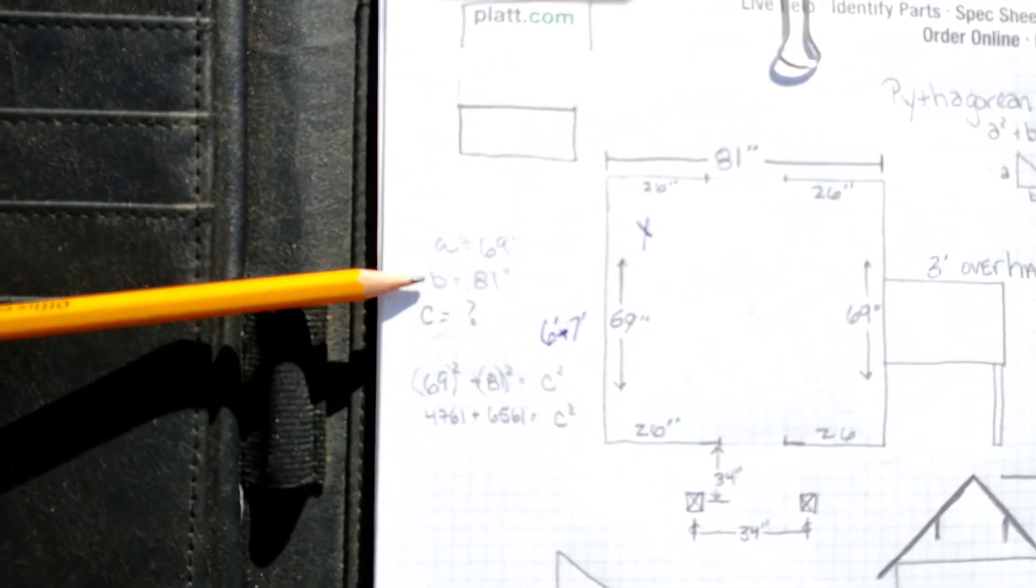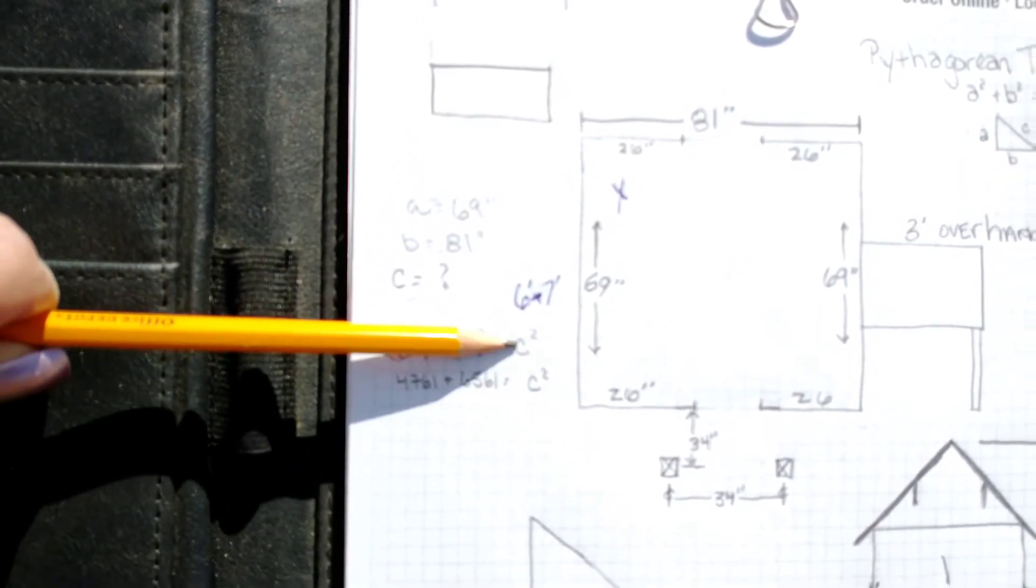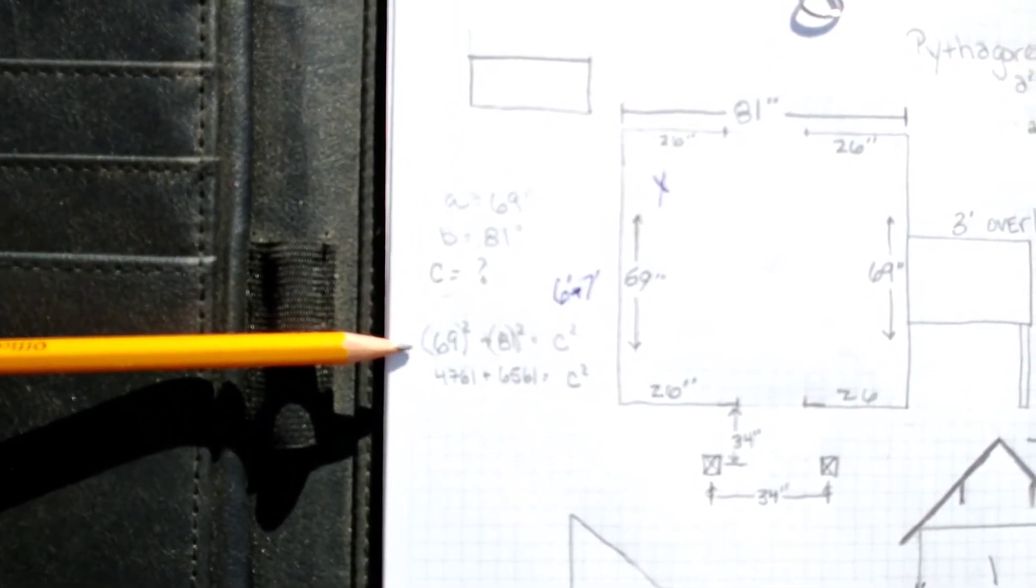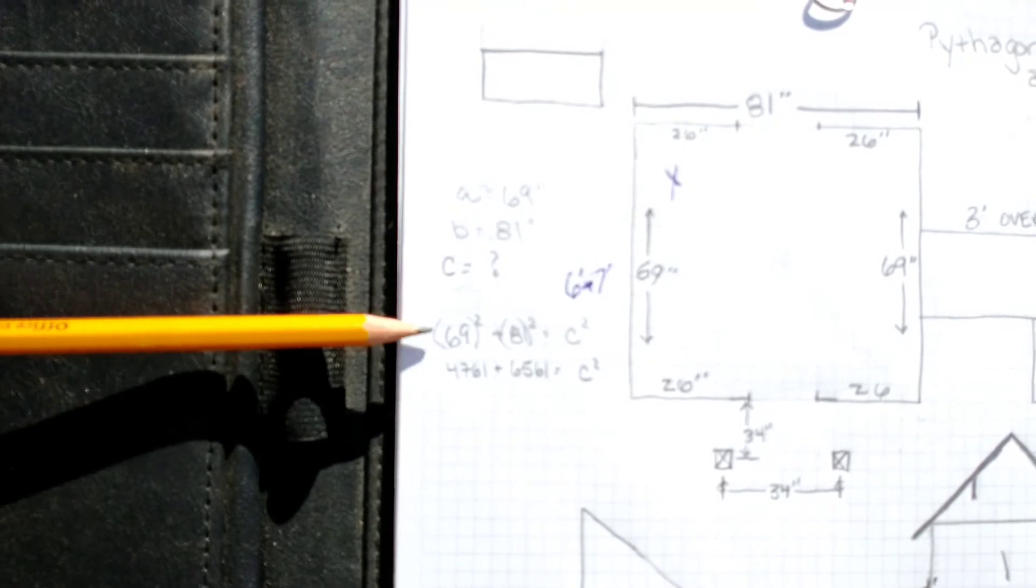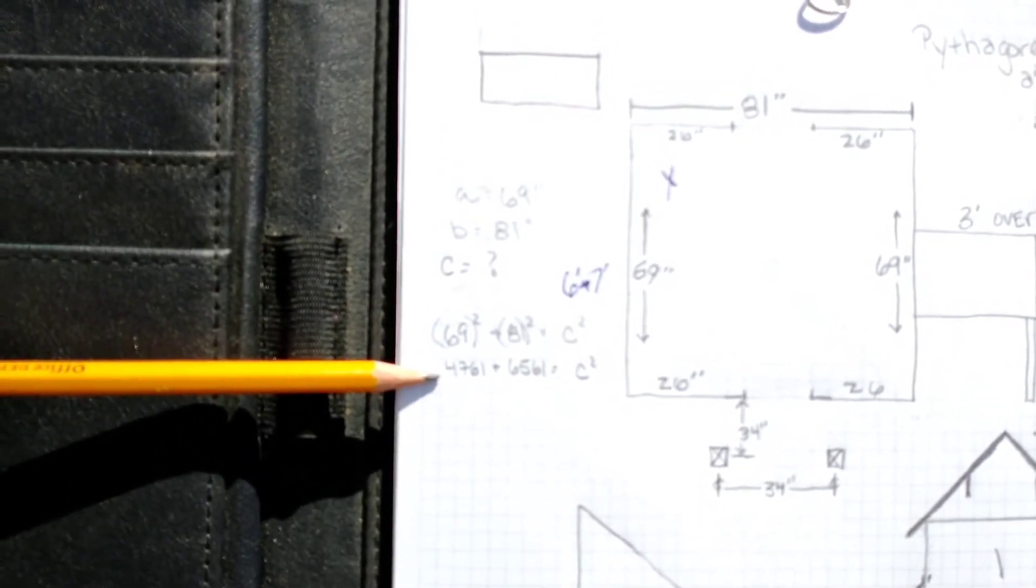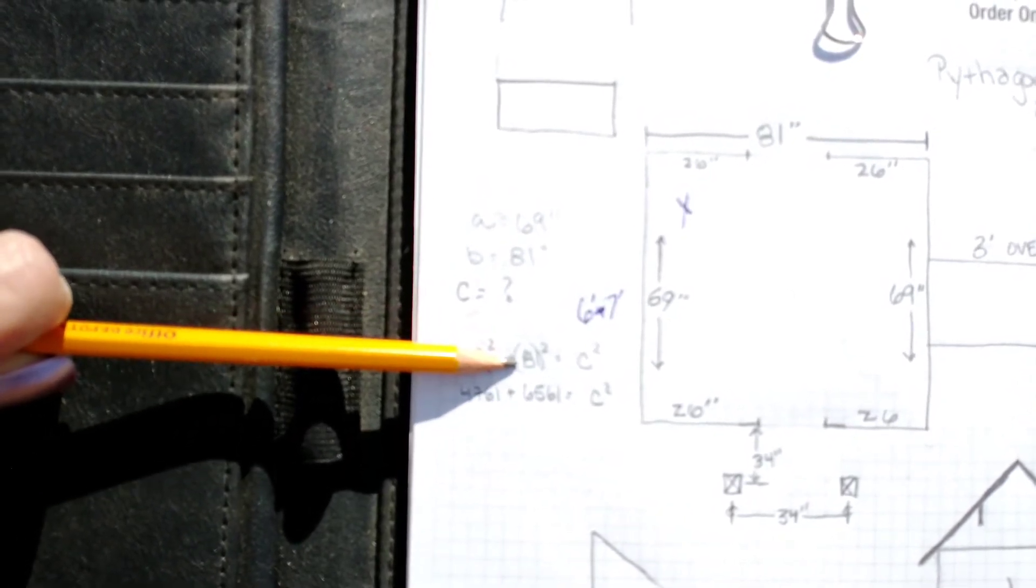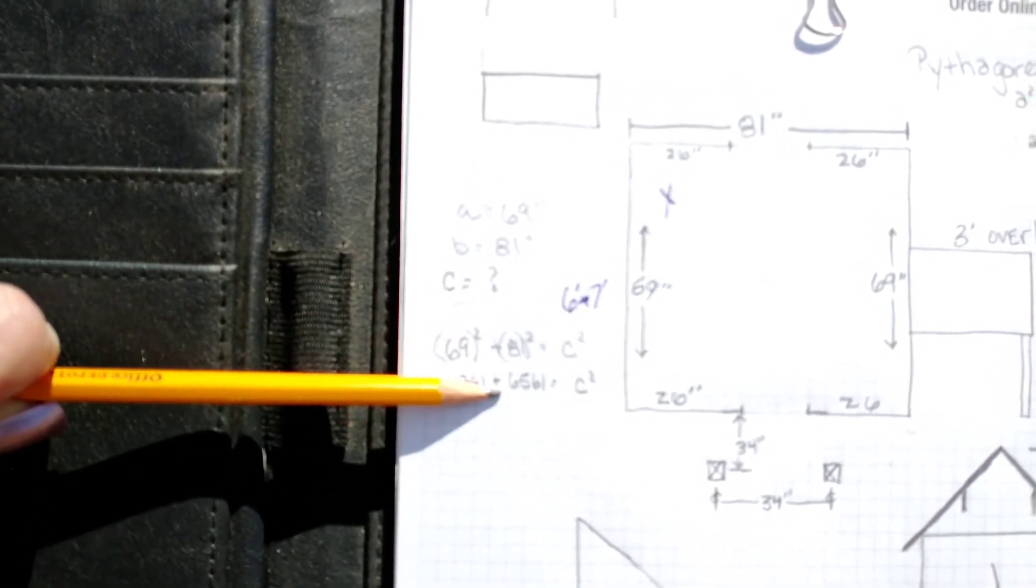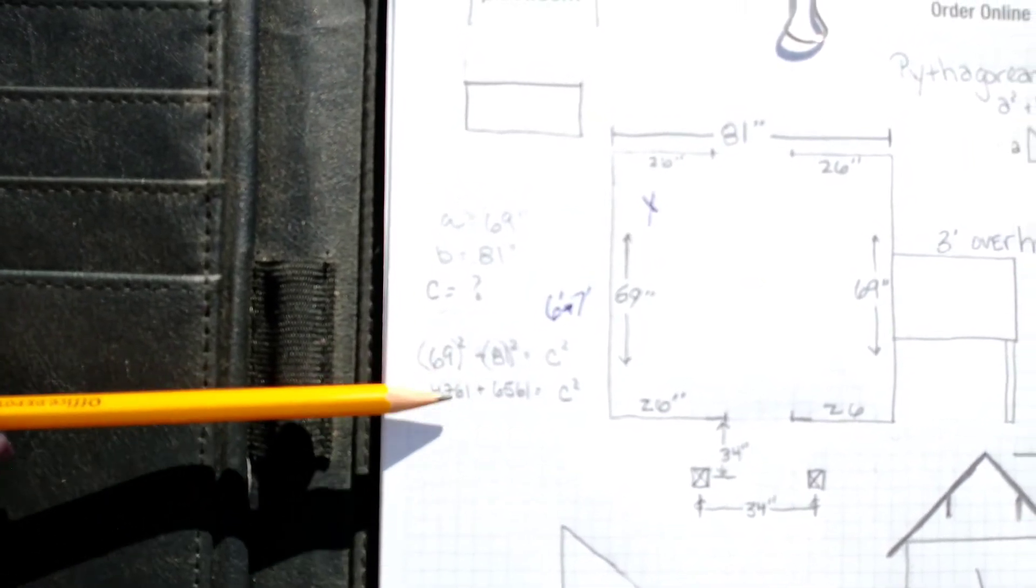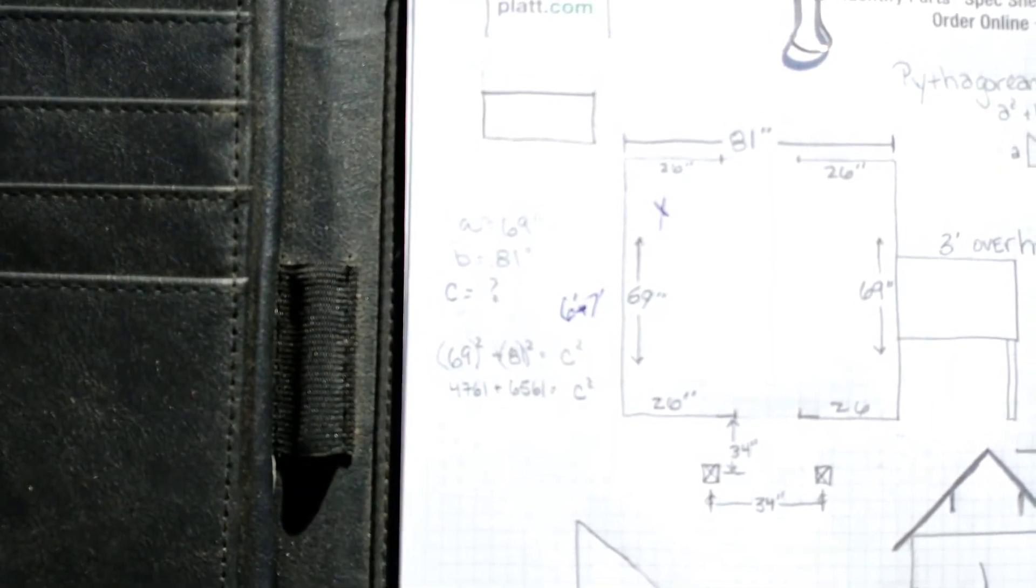So we did the calculations here. It's 69 squared plus 81 squared equals C squared. So when I do 69 squared, which really is just 69 times 69, it comes to 4,761 inches. If I do 81 squared, which again is just 81 times 81, I come to 6,561 inches. Those two added together will equal C squared. So let's add those up.